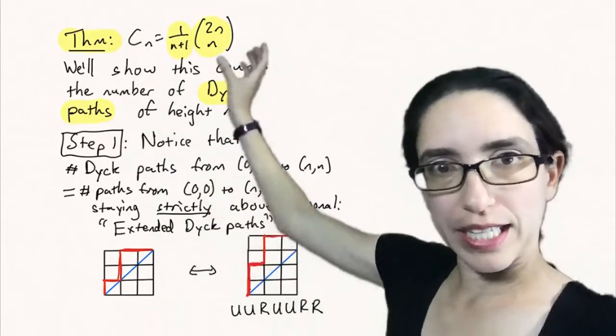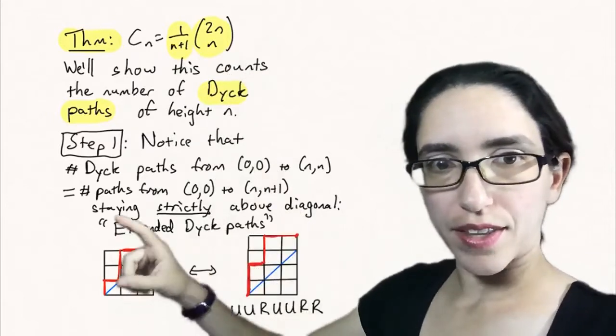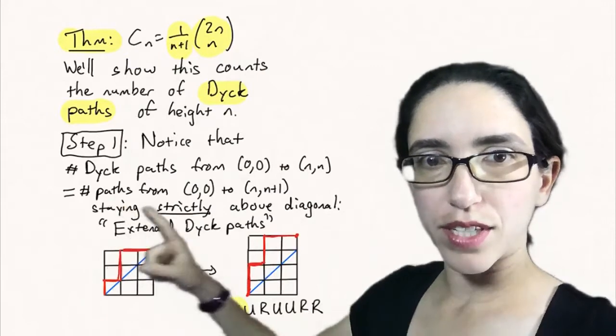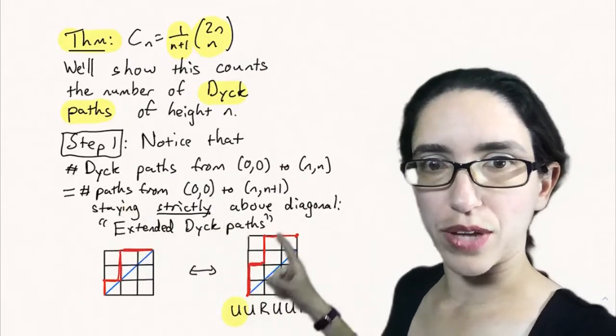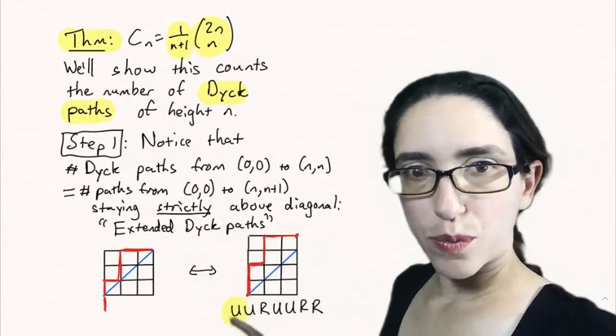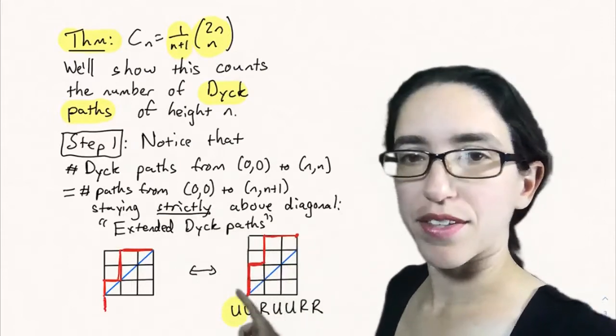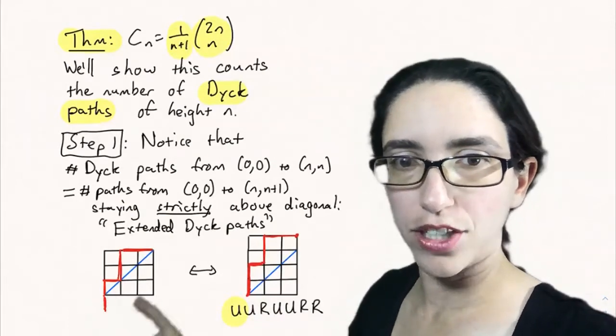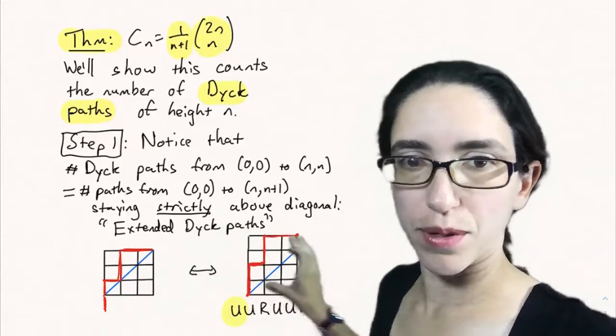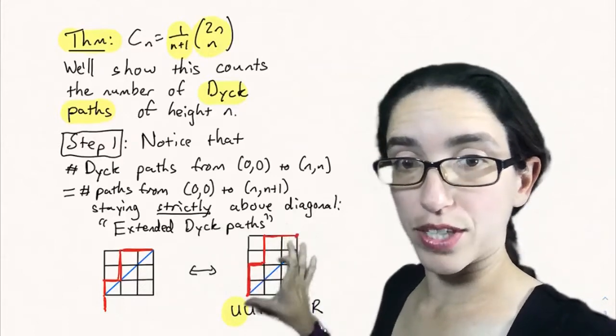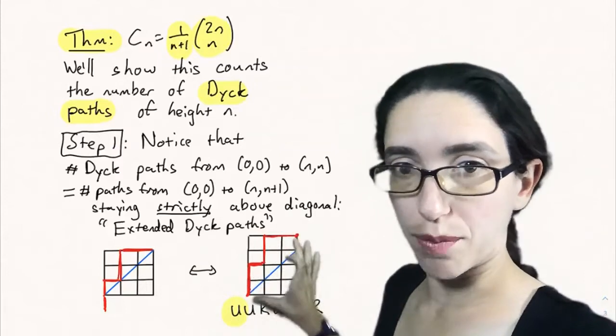Step one: first notice that the number of Dyck paths from (0,0) to (n,n) is equal to the number of paths from (0,0) to (n, n+1) staying strictly above the diagonal. These are called extended Dyck paths. The way we can make it is just extend this path by another red up edge and then shift the whole thing up to be over here. This path will definitely stay always strictly above the diagonal because we shifted it up by one.